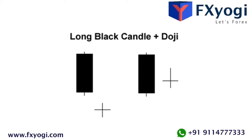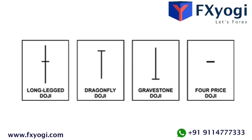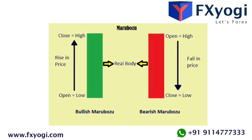Doji candlesticks have the same open and close price, or at least their bodies are extremely short. A doji should have a very small body that appears as a thin line. Doji candles suggest indecision or a struggle for positioning between buyers and sellers. Prices move above and below the open price during the session but close at or very near the open price. There are four special types of doji candlesticks.